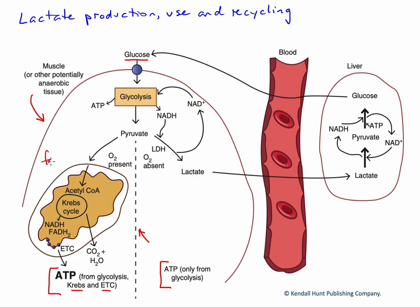Don't forget that fats and amino acids can also be used for energy production oxidatively, but only at the mitochondria — they are not involved in glycolysis. Now, glycolysis always produces pyruvate, and that pyruvate can go one of two directions: either the anaerobic pathway to the right or the aerobic pathway to the left. And there could be a mixture of the two.